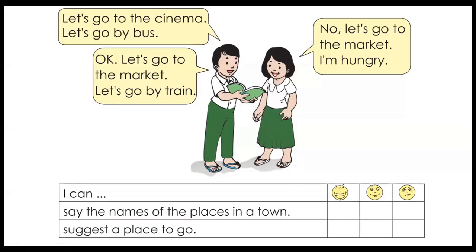Now we're going to go to the cinema. Let's look at the picture and say: let's go to the cinema, let's go by bus. Let's go to the market — I'm hungry. Okay, let's go to the market, let's go by train. Can you say the names of the places in the town? Can you suggest a place to go?